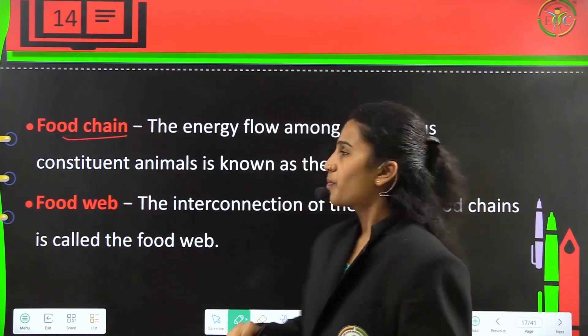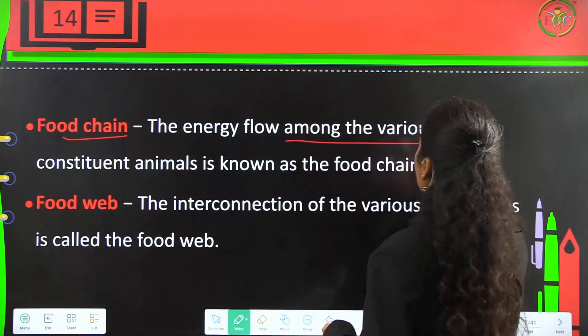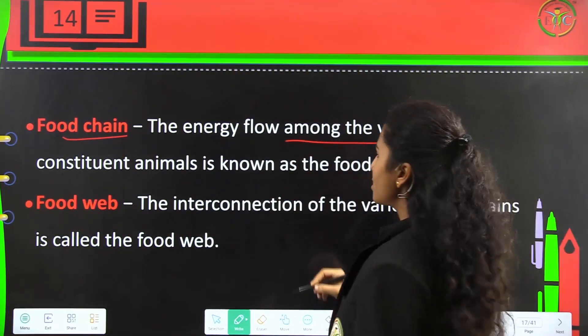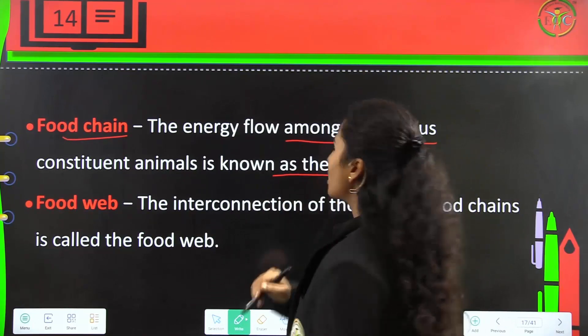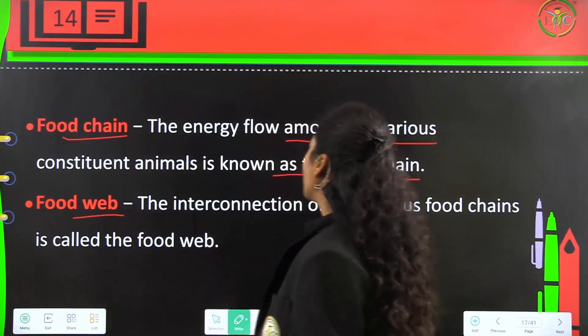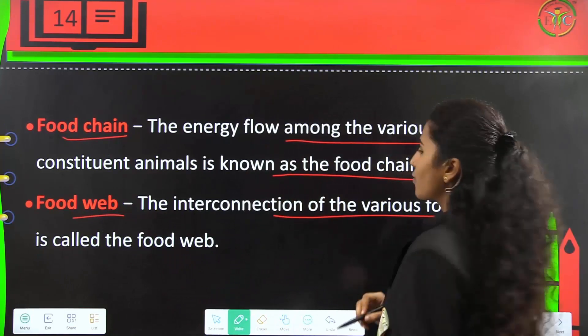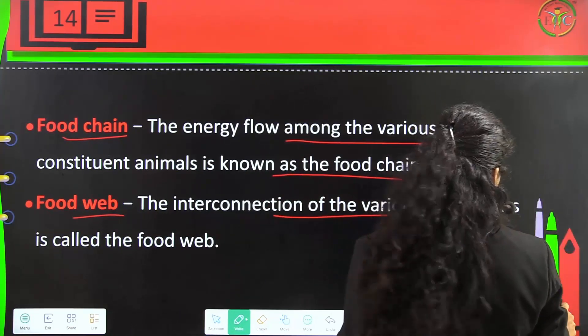Food chain: The energy flow among various constituent animals is known as the food chain and food web. The interconnection of various food chains is called the food web.